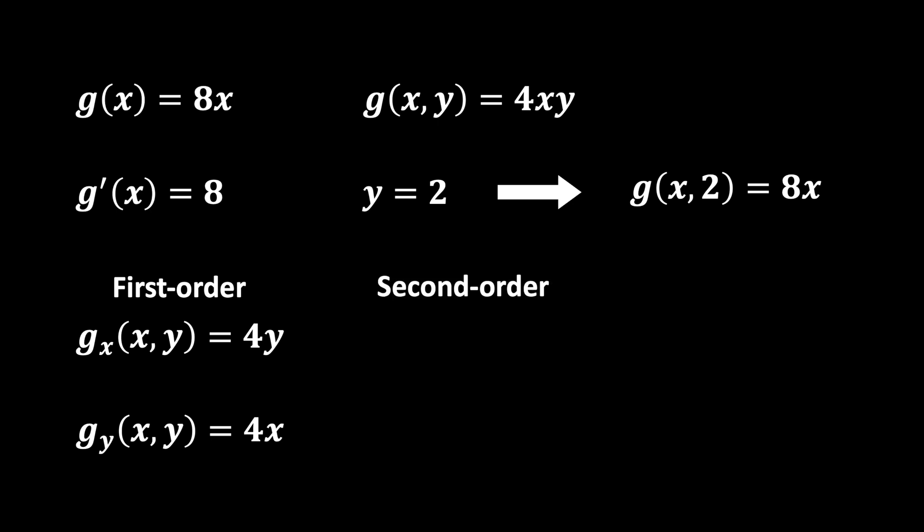Furthermore, you can find second order partial derivatives in the three following ways. With respect to x two times in a row. With respect to y two times in a row. Or firstly, with respect to x and then with respect to y, which is the same as firstly taking it with respect to y, and then with respect to x for all continuous functions. This third way is what we call a cross partial derivative.